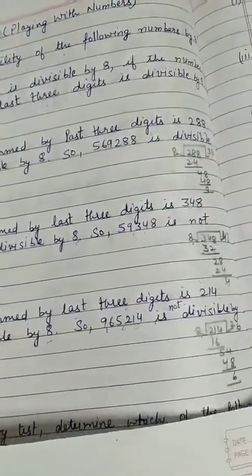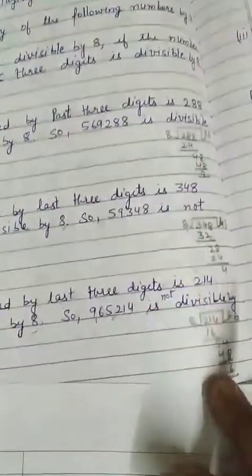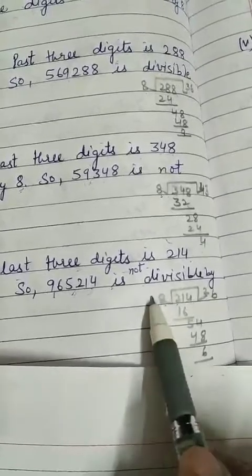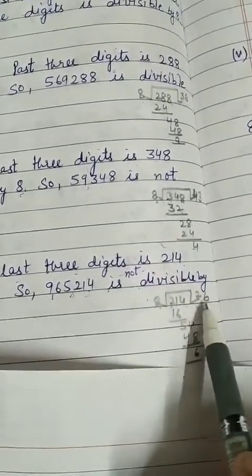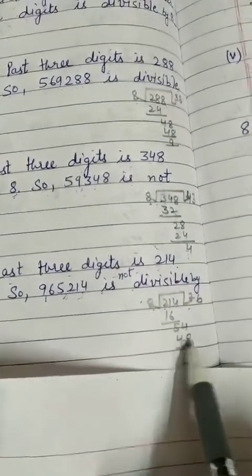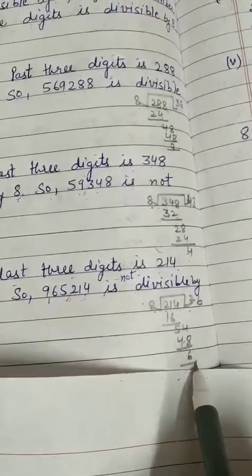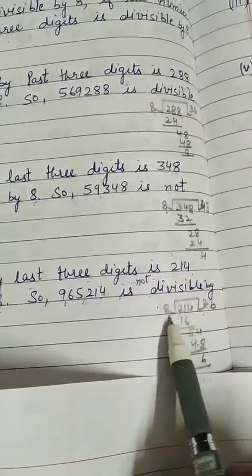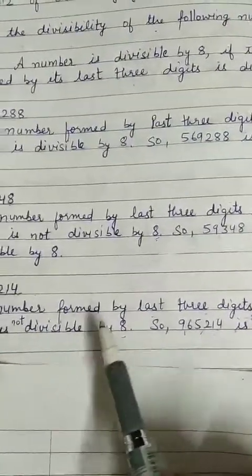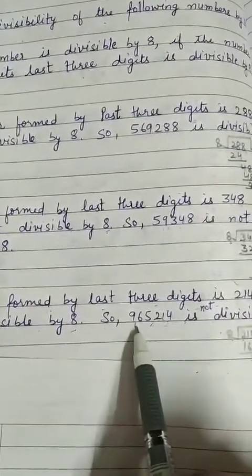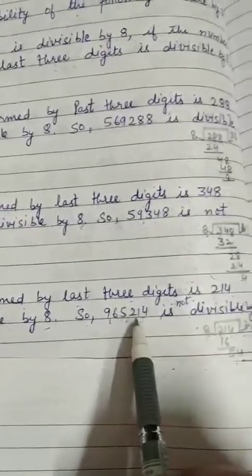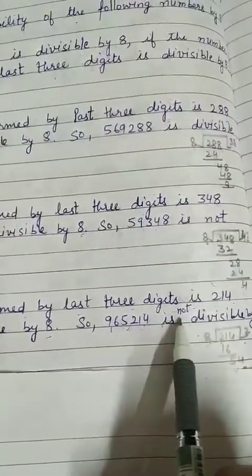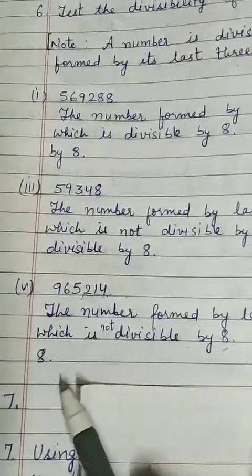Now, see that in the rough work, I have divided 214 by 8. My quotient is 26, and the remainder is 6. It means 214 is not divisible by 8. So, 9,65,214 is not divisible by 8.